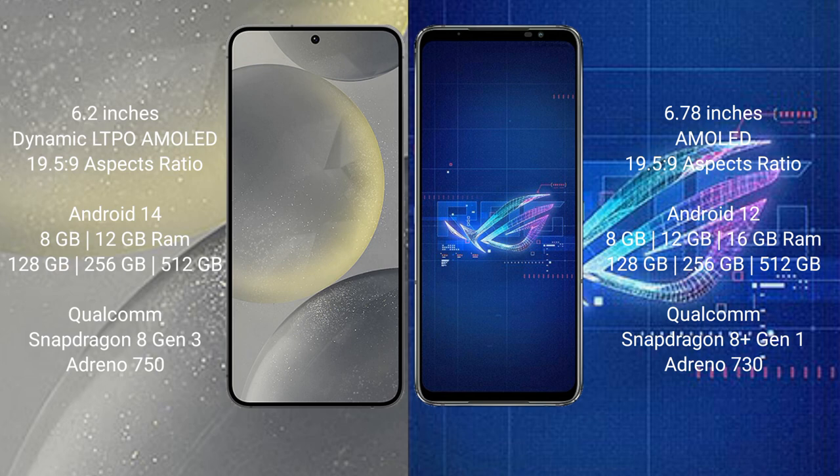The Samsung Galaxy S24 runs on the Android 14 operating system, while the ASUS ROG Phone 6 runs on the Android 12 operating system.